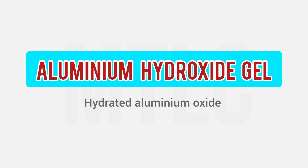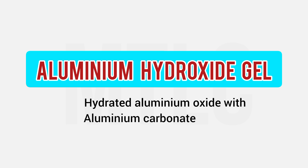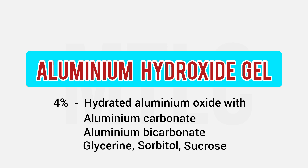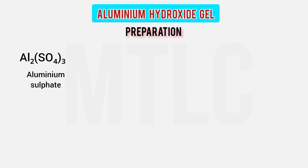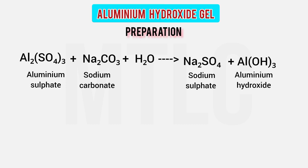Next is Aluminium Hydroxide Gel IP — a very important compound. It is hydrated aluminium oxide with some amount of aluminium carbonate and bicarbonate. It contains about 4% aluminium oxide. Glycerin, sorbitol, and sucrose are added as sweetening and flavoring agents. In preparation: aluminium sulphate is reacted with sodium carbonate and water, giving sodium sulphate plus aluminium hydroxide plus carbon dioxide.